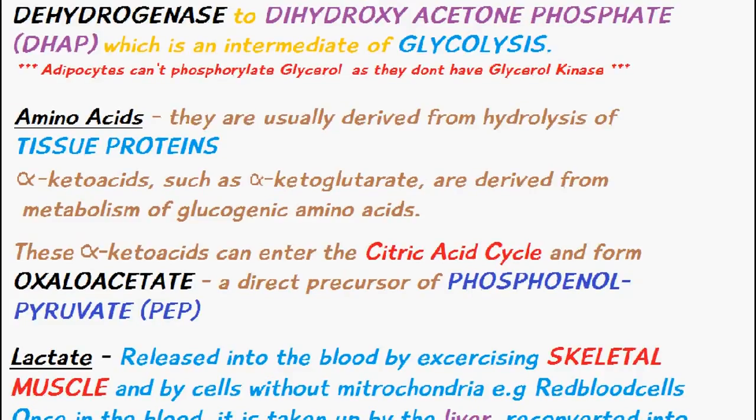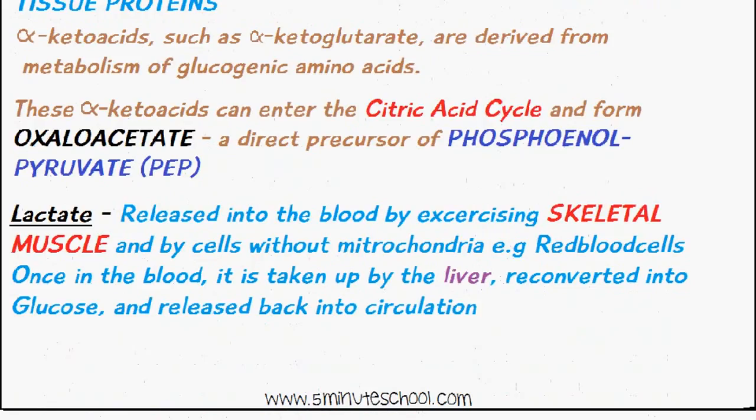Finally, the last substrate we're going to talk about is lactate. It's released into the blood by exercising skeletal muscle and by cells without mitochondria like red blood cells. Once it's in the blood, it's taken up by the liver, reconverted into glucose, and released back into the circulation.